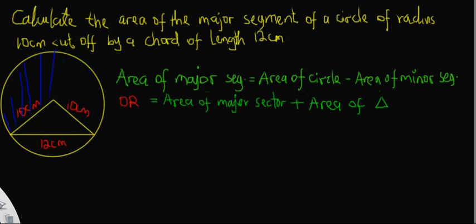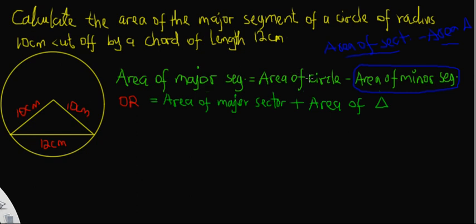I would prefer the second formula because it's somehow shorter. To calculate using the first formula, I would need to find the area of the minor segment, which requires the area of the minor sector minus the area of the triangle. So that means I need to calculate the area of sector, area of triangle, and area of circle — completing three different things.